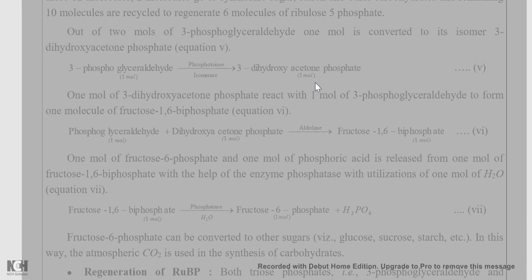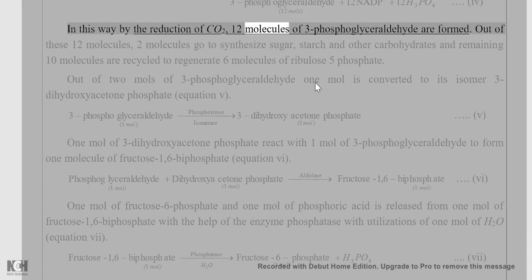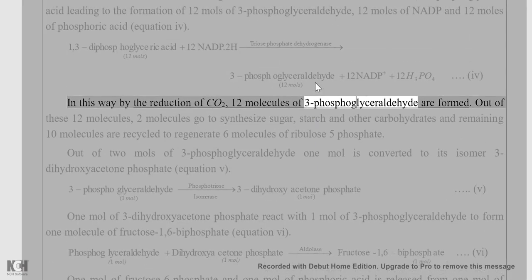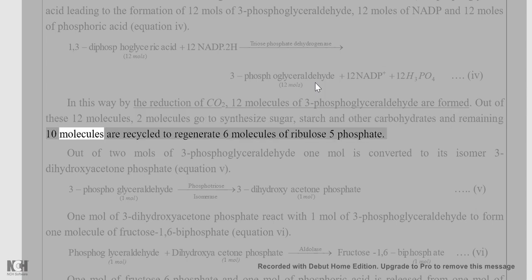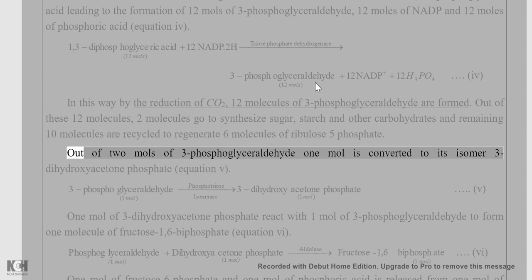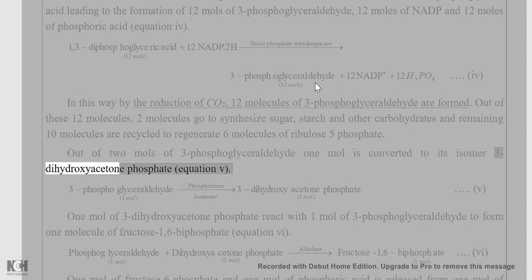By the reduction of CO2, 12 molecules of 3-phosphoglyceraldehyde (PGAL) are formed. Out of these 12 molecules, two molecules go to synthesize sugar, starch, and other carbohydrates, and the remaining 10 molecules are recycled to regenerate 6 molecules of ribulose-5-phosphate. Out of 2 moles of PGAL, one mole is converted to its isomer, 3-dihydroxyacetone phosphate.